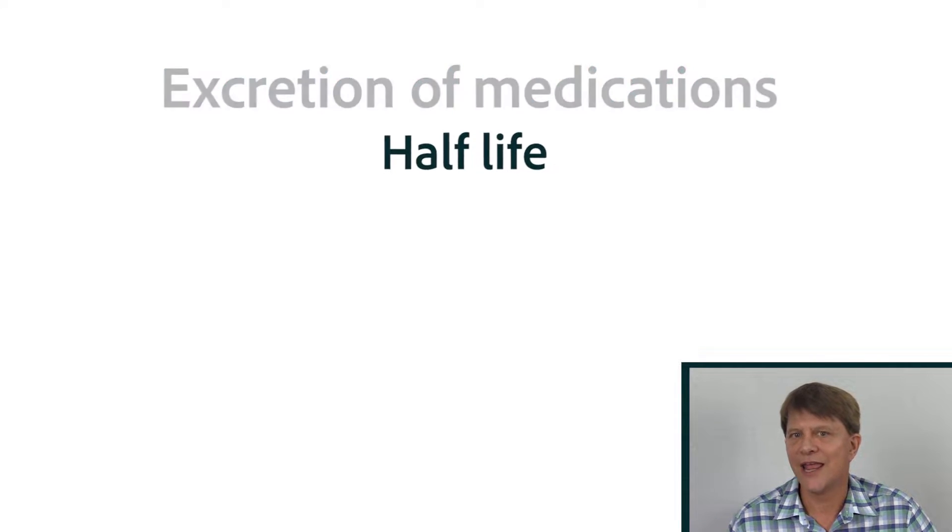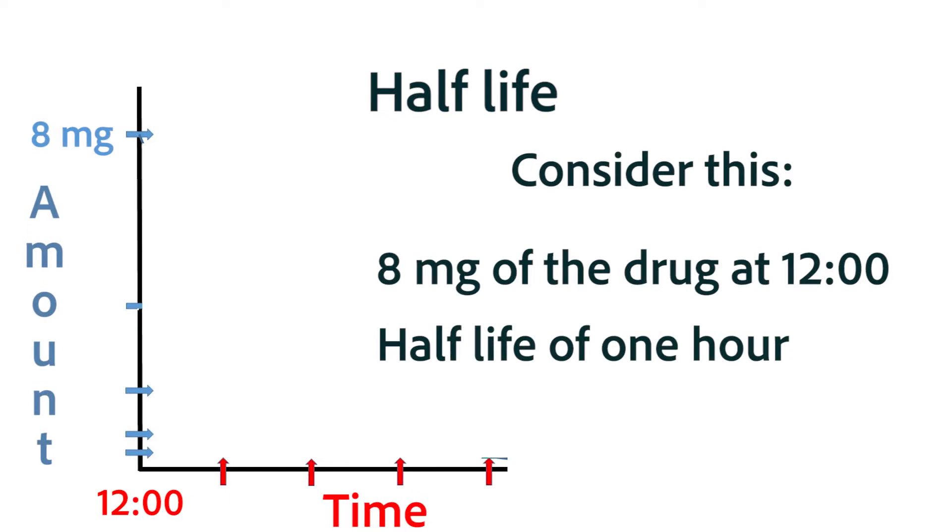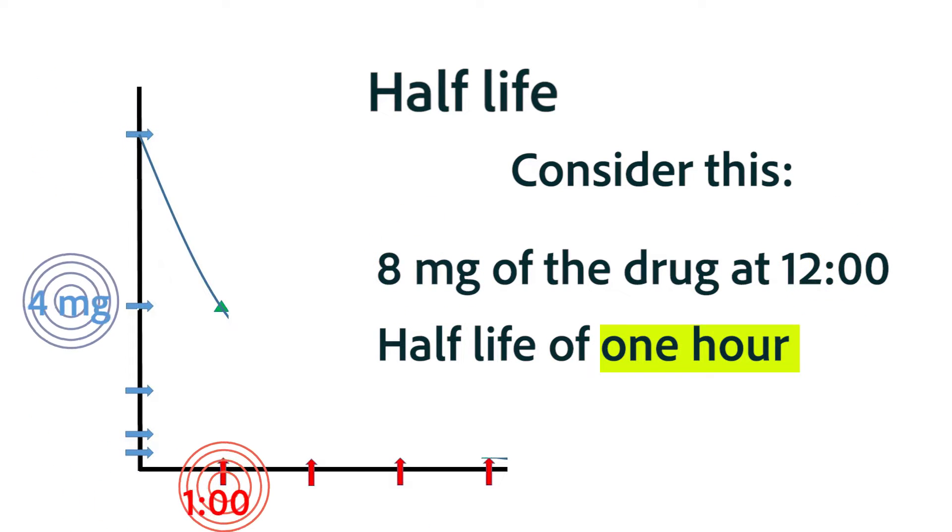The half-life of a drug is the time that it takes to reduce the concentration of the medication to half the original amount. So if you had 8 milligrams of medication in your system at 12 o'clock, and that drug had a half-life of 1 hour, that would mean that there would be about 4 milligrams of drug in your system at 1 o'clock.